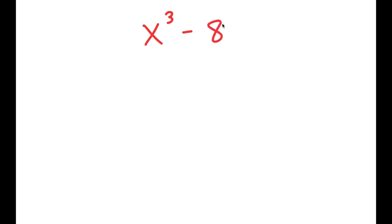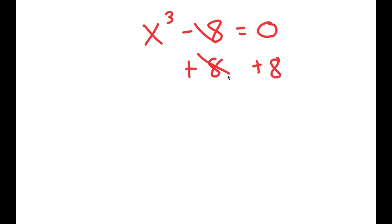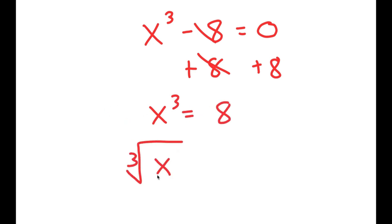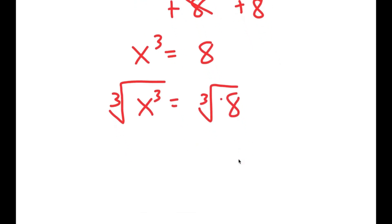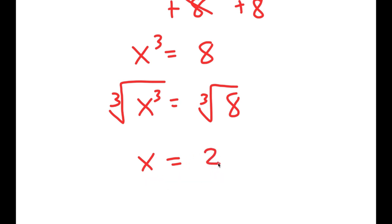In this video, I'm going to solve the equation x to the power of 3 minus 8 is equal to 0. How most people solve this equation is they add 8 on both sides, so they get x to the power of 3 is equal to 8. Then they take the cube root on both sides — the cube root of x cubed is x, and the cube root of 8 is 2, so they get x equals 2, which is a solution to this equation.